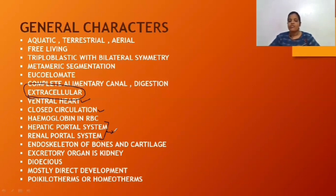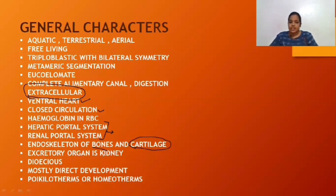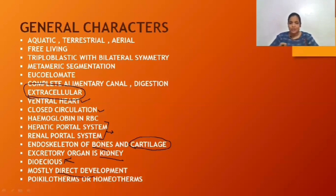The excretory organ is the kidney. The members are dioecious — males and females are different. Mostly they have direct development, meaning most chordate members do not have larval stages, though some do. We will learn the larvae of some important members. Most members have indirect or direct development depending on the group, and they can be classified as poikilotherms or homeotherms.